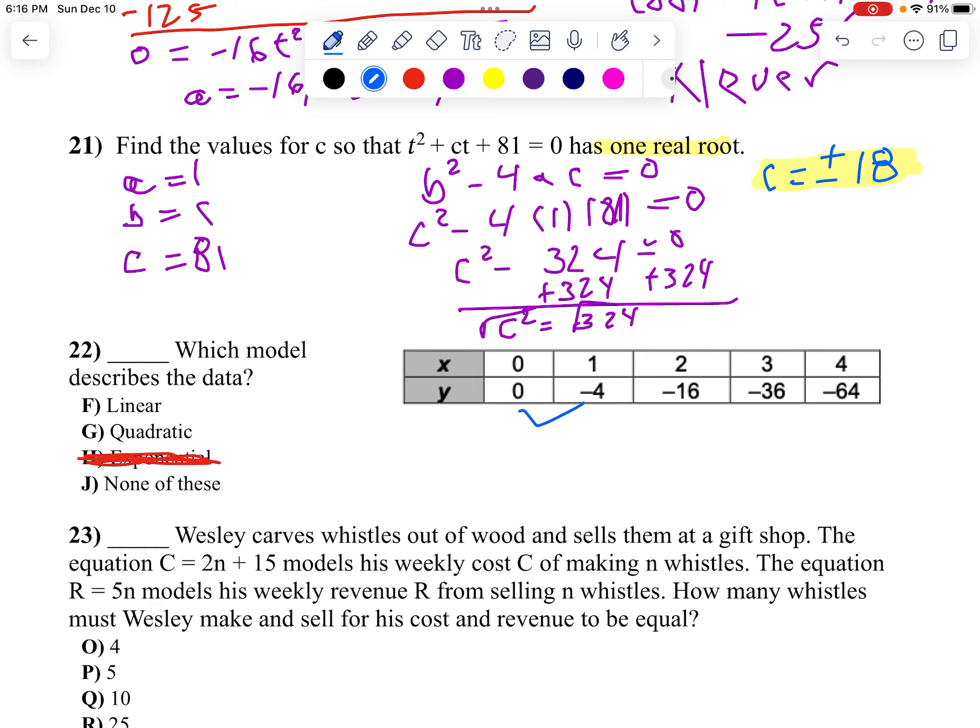And then look at your common difference. 0 to negative 4, I'm going down 4. Negative 4 to negative 16, I'm going down 12. Notice my first differences are not the same. So once again, it's not linear.